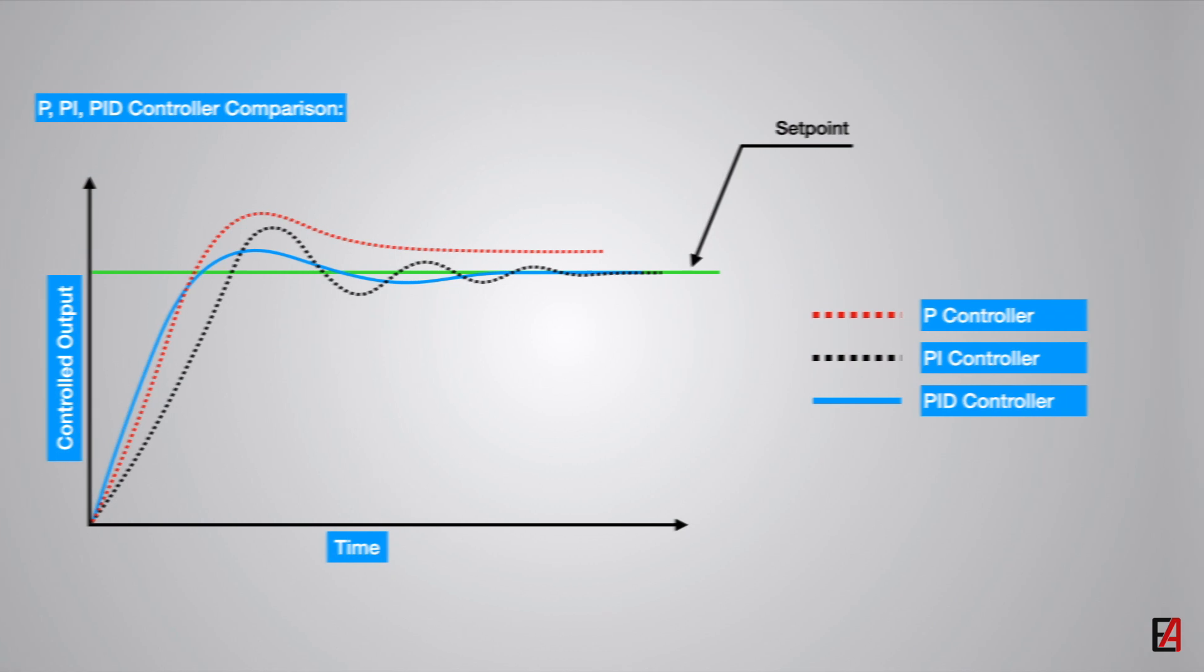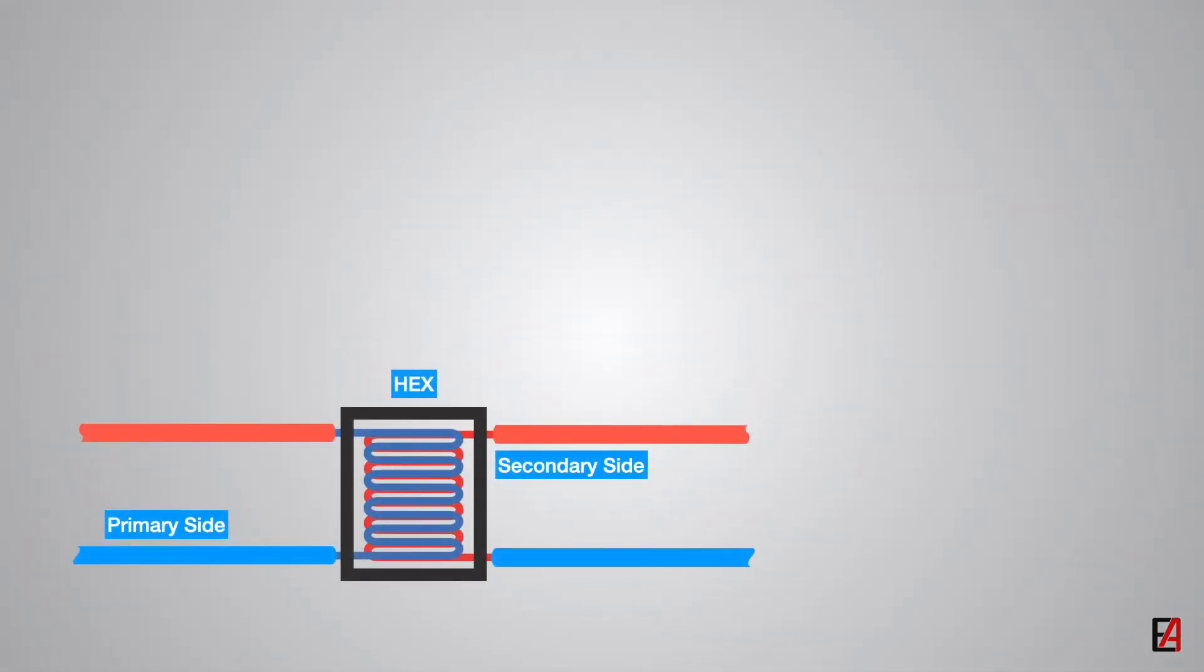Let us take an example of a heat exchanger where the secondary side chilled water supply temperature needs to be maintained. So, the secondary side supply temperature is the process variable and the desired temperature is the setpoint.